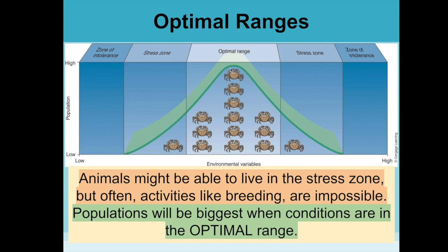When an organism is living in its optimal range, things are going really well — the right amount of food, sunlight, and shelter — and the species can grow optimally. If you shift a little, like more or less salty, hotter or colder, the population can still grow but it's not quite as good. Further outside that is the stress zone, where organisms can still be found but aren't thriving or reproducing well. Even further out is the zone of intolerance, where none of them can live at all.